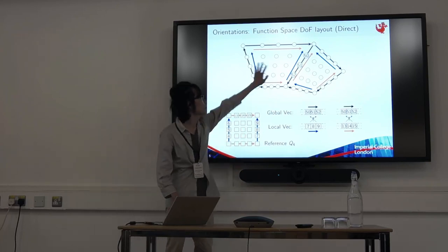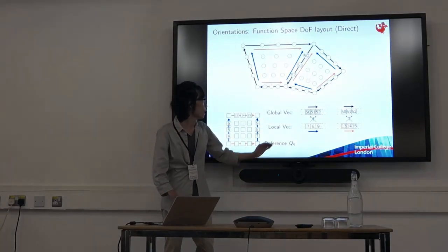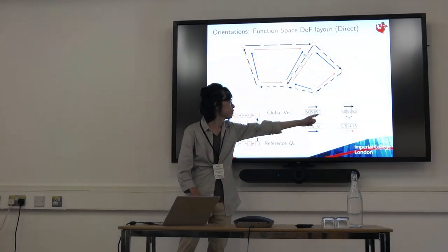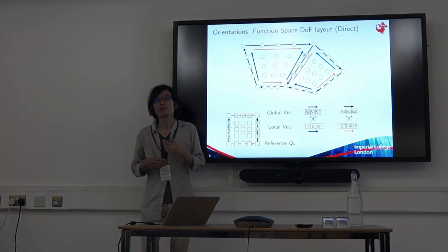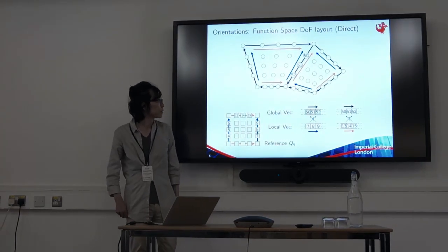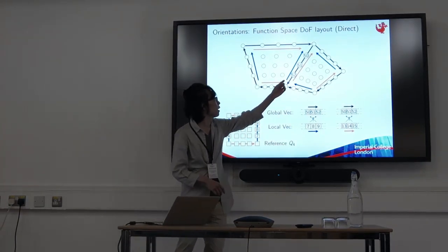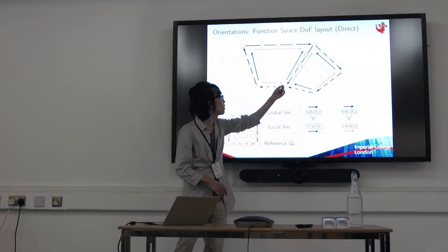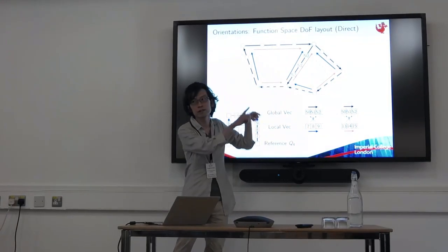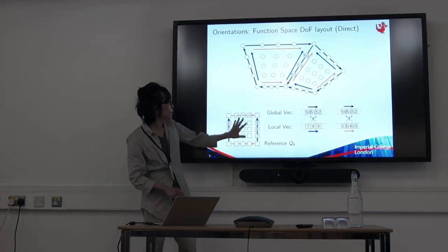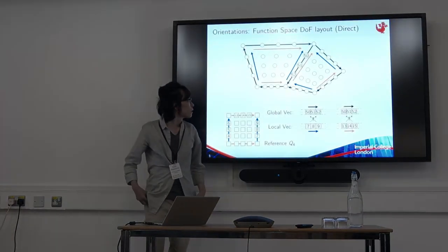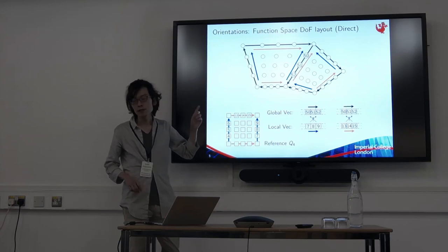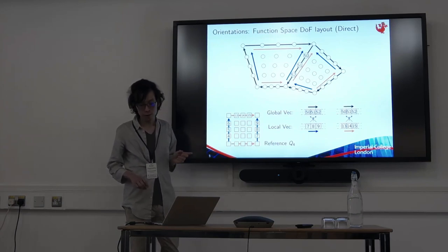Now these reference element to physical element mappings are completely arbitrary. But we have to do more work when we make LG maps. For example, for this element on this edge, 789 are mapped to 50 to 5150. So we have to apply reverse permutation here. This is indicated by these black arrow and blue arrow pointing in different directions. And same thing happens for this element on this edge.